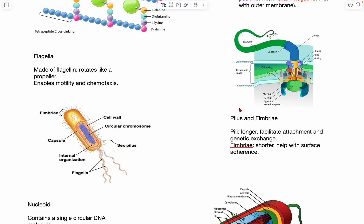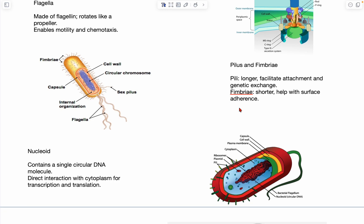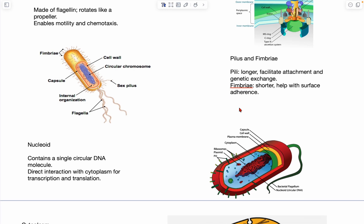All right, so now we're going to talk about the pilus and fimbriae. And so pili are like a lot longer, and they're sort of hair-like structures that essentially facilitate attachment and genetic exchange through this process, which is called conjugation.